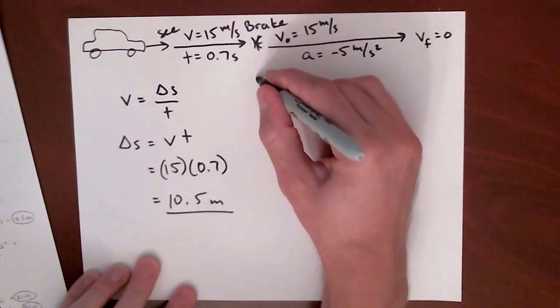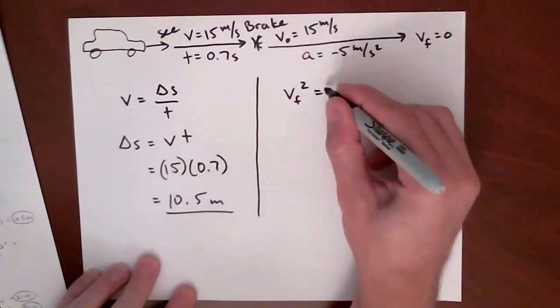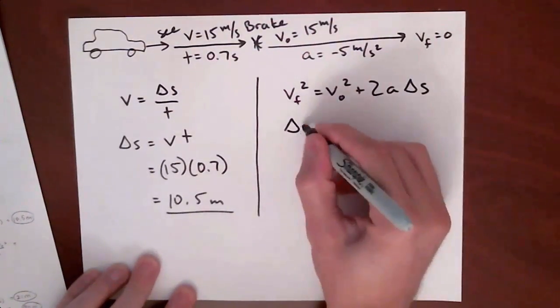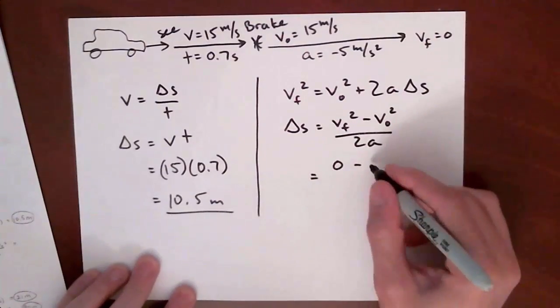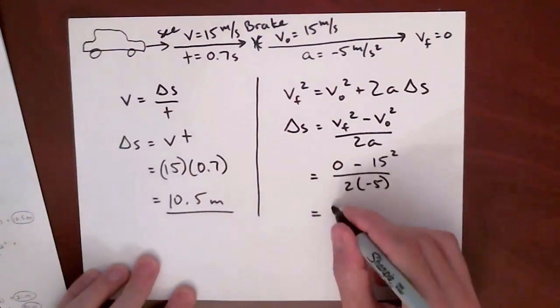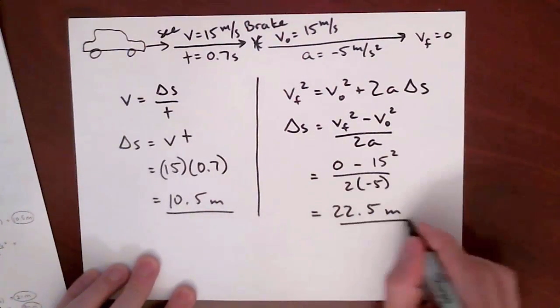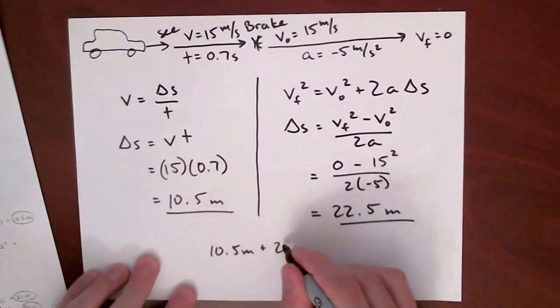So now, let's see what we can do for the slowing down part. We don't know time, so we'll pick the equation that does not have time in it. We rearrange it, plug in what we know, and we get a value for the slowing down part distance. Then, we're just going to add those two together to get the total distance that we're stopping.